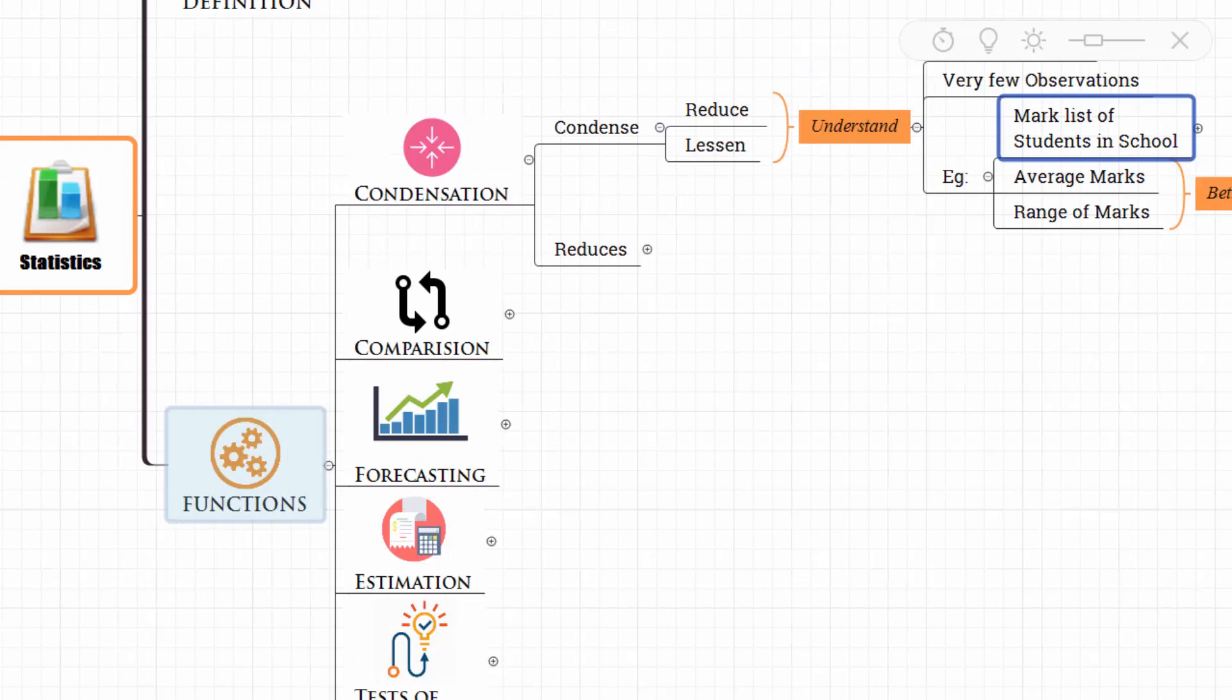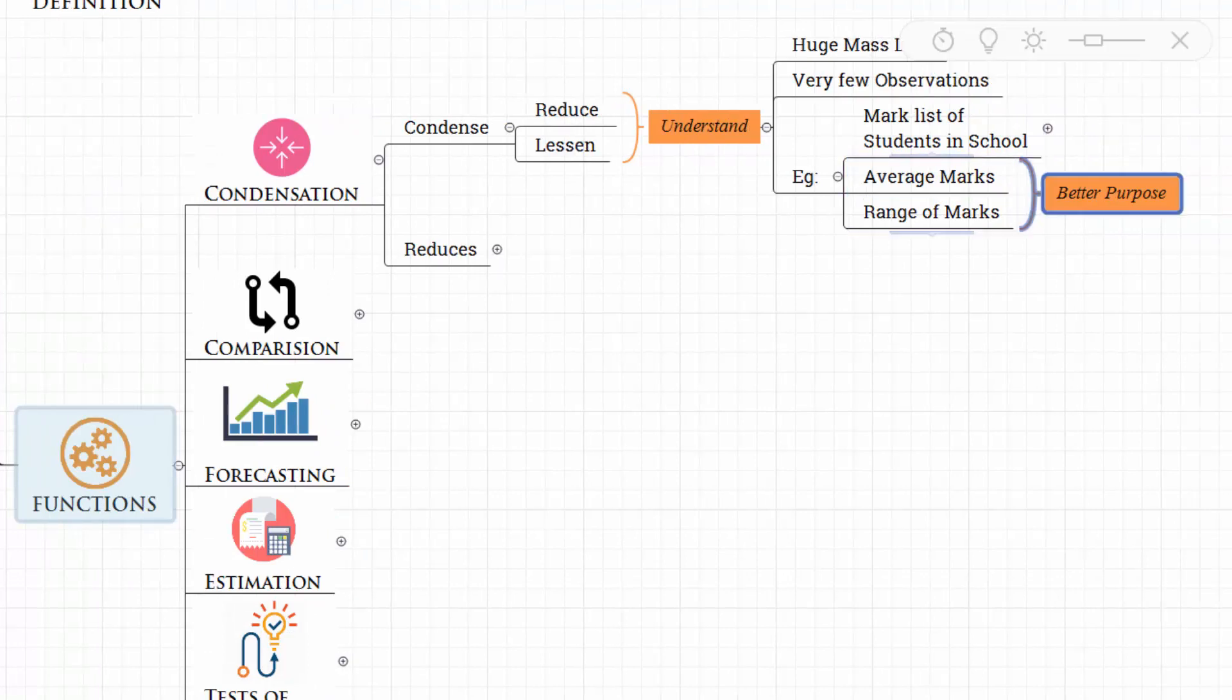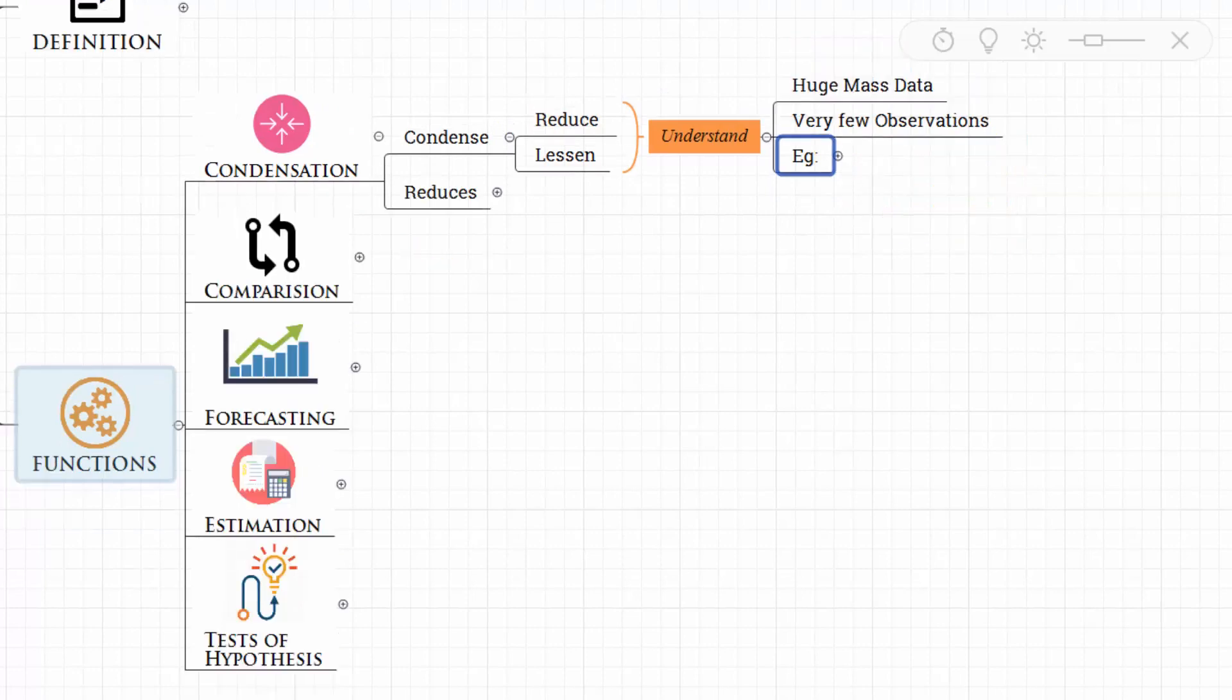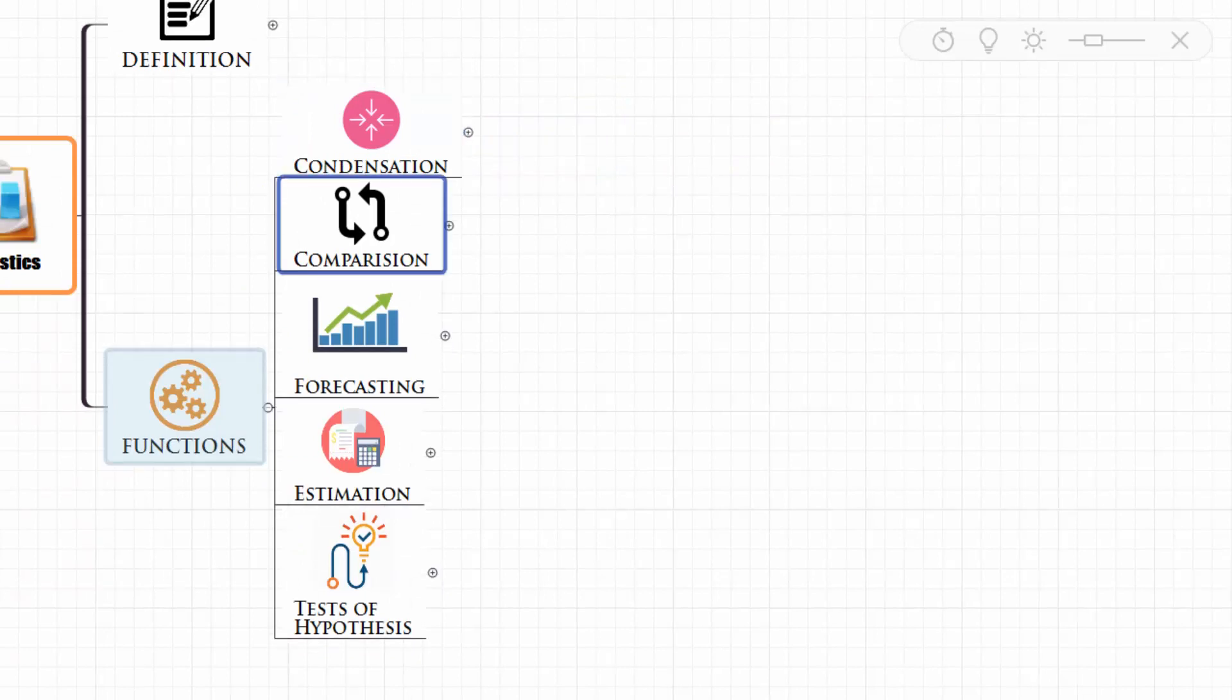For example, you are given the mark list of all students in a school. It will serve no purpose, but if you are given average marks or range of marks of students, that would serve a better purpose. That's what condensation does. Condensation reduces complexity and that is one function of statistics.